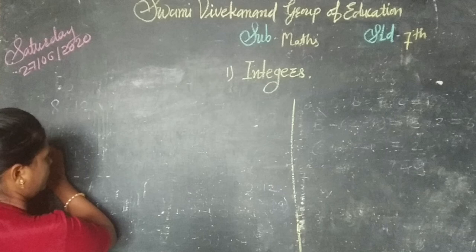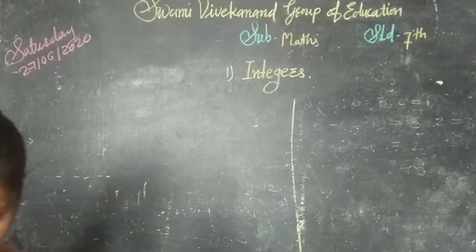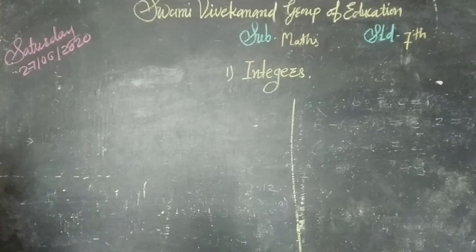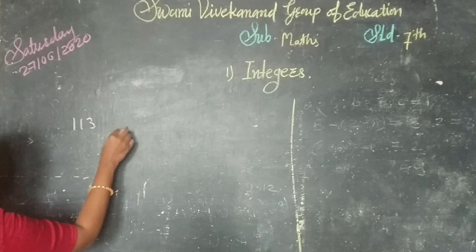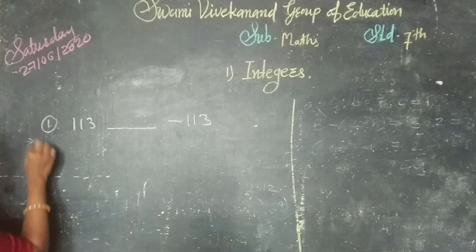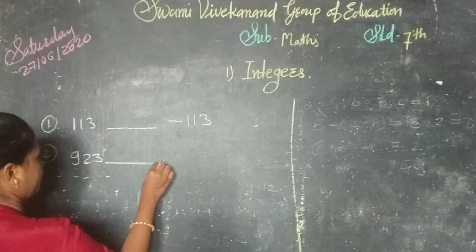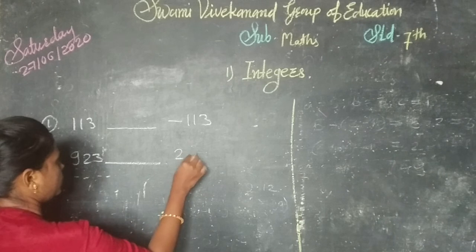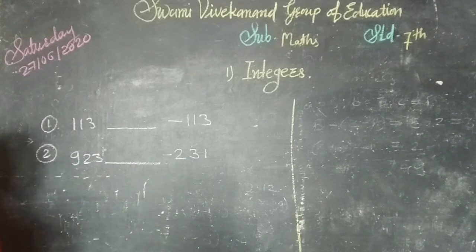After that ordering, there is one more question: compare the given integers. The first example is 113 compared with minus 113. The second example is 923 compared with 231. Then 622. The third example is...